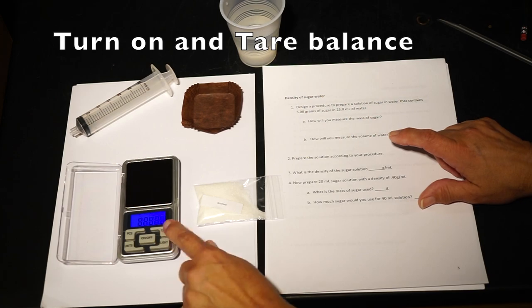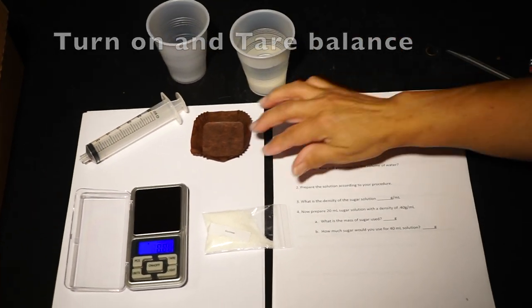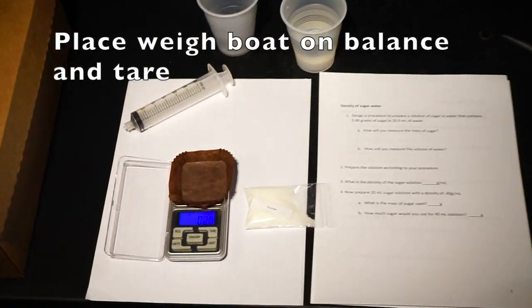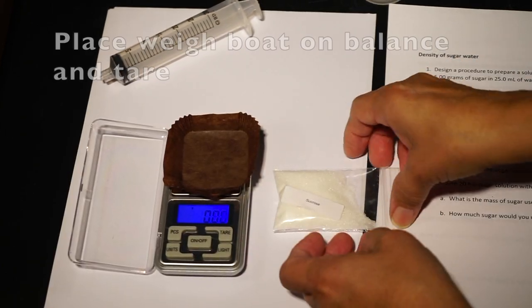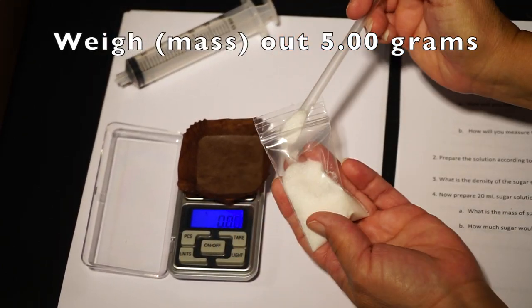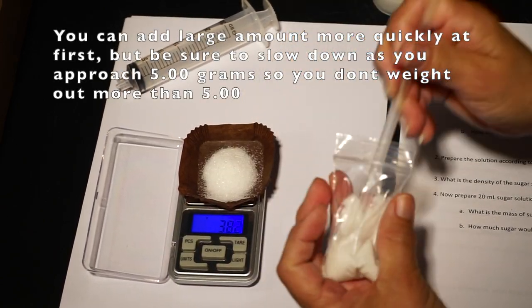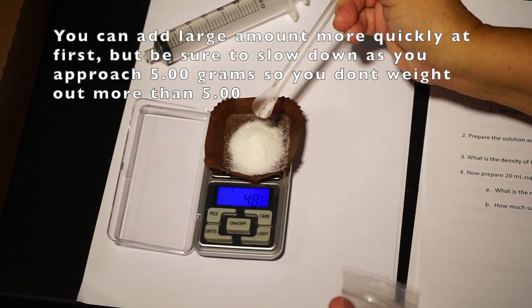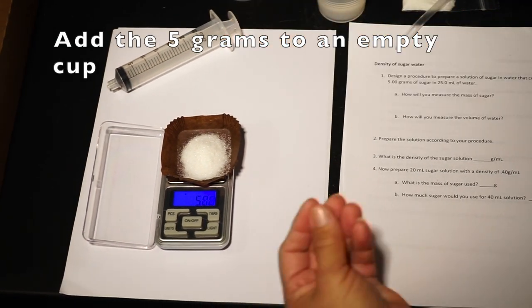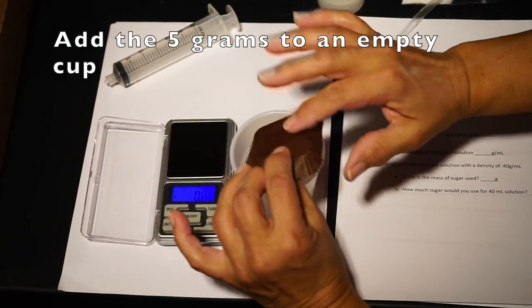First, turn on and tare your balance. Add a weigh boat to the balance and tare it. Use your spatula to weigh out 5.00 grams of sugar. You can go quickly at first, but be sure to slow as you approach 5 grams. Add the 5 grams of sugar to an empty cup.